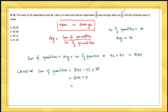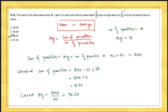The corrected average = corrected sum / number of quantities = 1845 / 40 = 46.125, which is option C. Another way of thinking: since the value increased from 33 to 38, the average must increase, so options below 46 are eliminated. The increase is very small so only a slight increase is expected — option C is correct. This is a robust way of approaching this question.